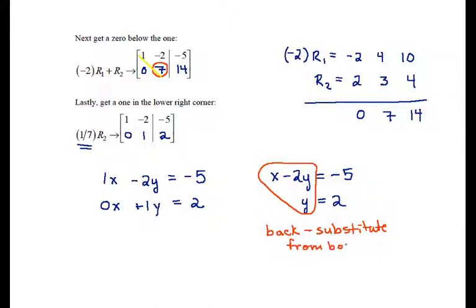So we're going to work our way up, starting by substituting 2 into the equation above it. So that gives me x minus 2 times this value of y, which is 2, is equal to negative 5. And that is, of course, x minus 4 equals negative 5. Adding 4 to both sides gets me that x is equal to negative 1. So I have the ordered pair (-1, 2) as the solution to this system of equations.